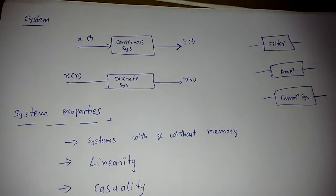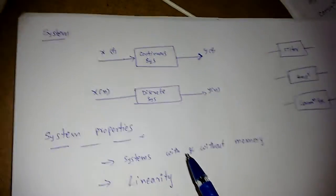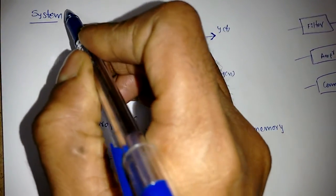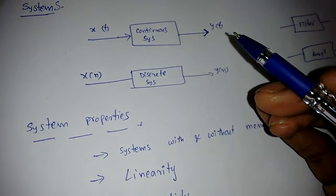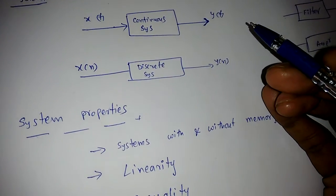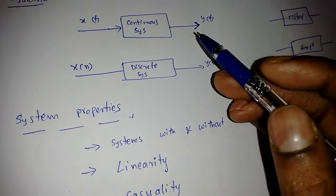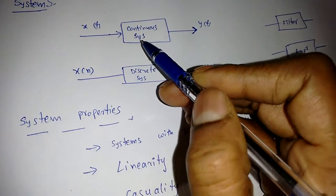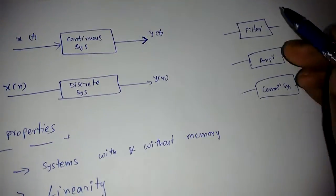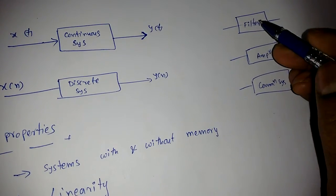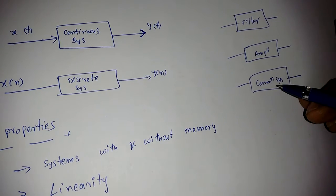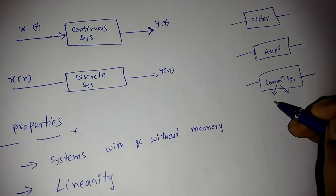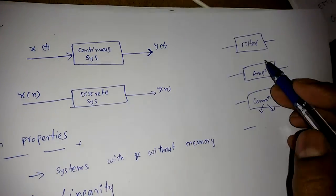Good morning everyone. In this video we are going to discuss some basics on systems. A system contains some components, devices, or subsystems — it may be a filter, an amplifier, or a communication system having many interconnected subsystems.